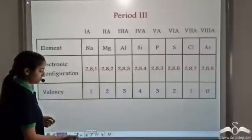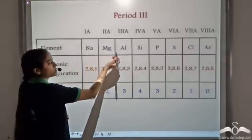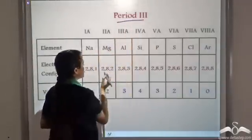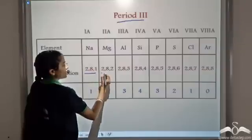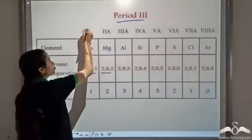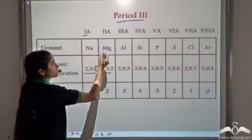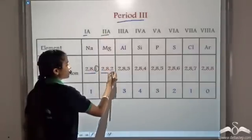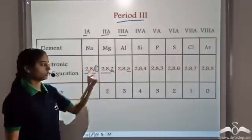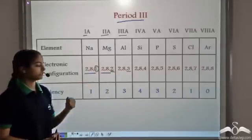Let's take period 3 as an example. The elements are sodium, magnesium, aluminium, silicon, and so on. Since the period number equals the number of shells, each of these elements has 3 shells. Also, the group number equals the number of valence electrons — so group 2A has 2 valence electrons, group 3A has 3 valence electrons, and so on.